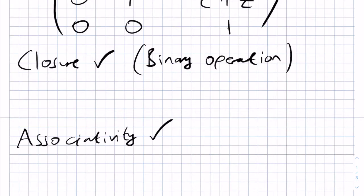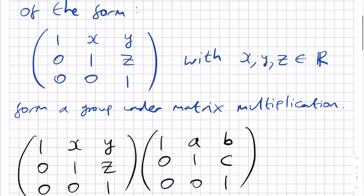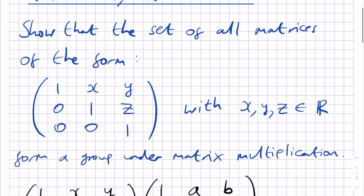Next, we need to check that this set has an appropriate identity under matrix multiplication. We know that the usual 3x3 matrix multiplication identity is 1, 0, 0, 0, 1, 0, 0, 0, 1.